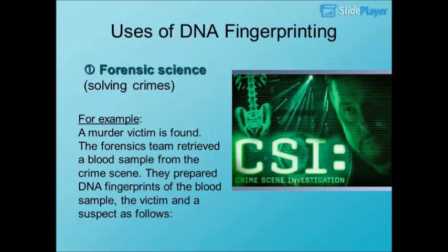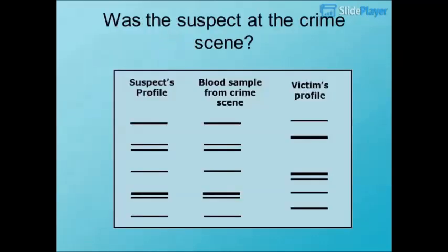Uses of DNA Fingerprinting — Forensic Science: Solving Crimes. For example, a murder victim is found. The forensics team retrieved a blood sample from the crime scene. They prepared DNA fingerprints of the blood sample, the victim, and a suspect. Was the suspect at the crime scene?